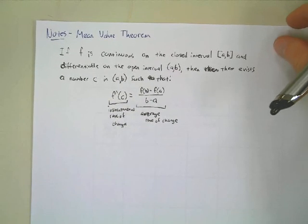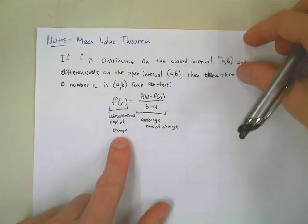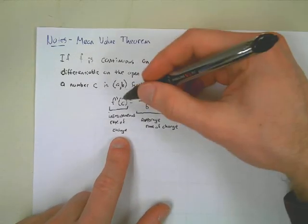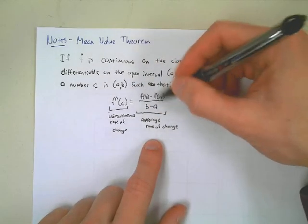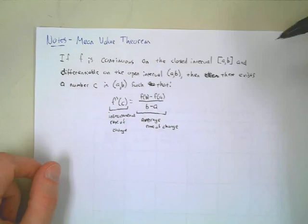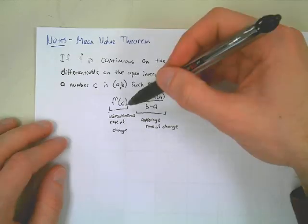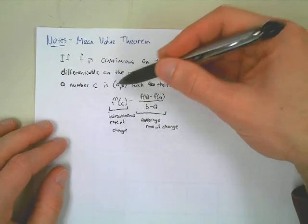So the mean value theorem says that the instantaneous rate of change — the derivative — is equal to the average rate of change at some point C that's in between A and B.